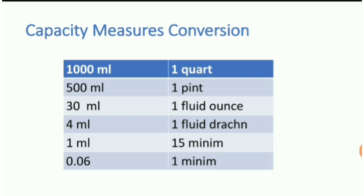Conversion table of capacity: 1000 ml is equal to 1 quart; 500 ml is equal to 1 pint; 30 ml is equal to 1 fluid ounce; 4 ml is equal to 1 fluid drachm; 1 ml is equal to 15 minims; and 0.06 ml is equal to 1 minim.